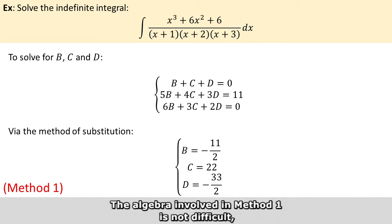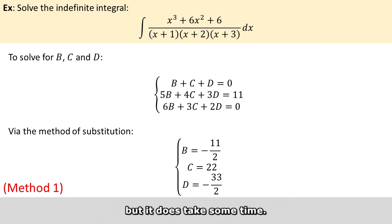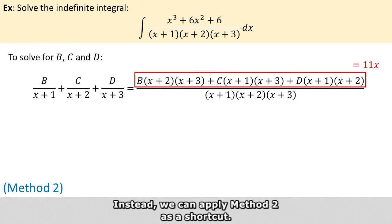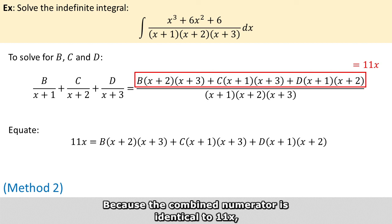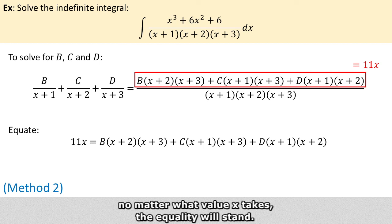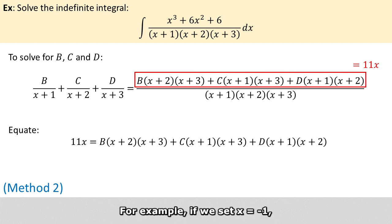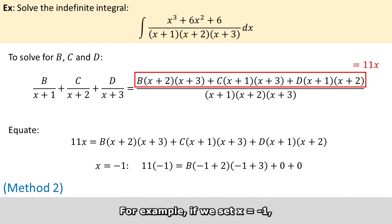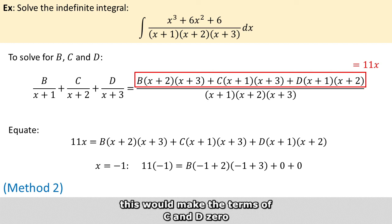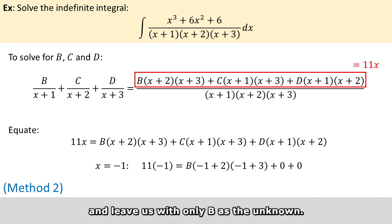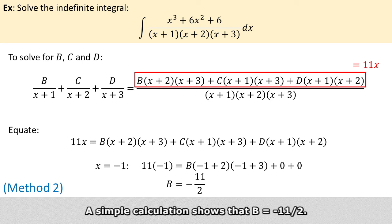The algebra involved in method 1 is not difficult, but it does take some time. Instead, we can apply method 2 as a shortcut. Because the combined numerator is identical to 11x, it means that no matter what value x takes, the equality will stand. In other words, we can take some special values of x to simplify the equality. For example, if we set x equals minus 1, this will make the terms of C and D 0, and leaves us with only B as the unknown. A simple calculation shows that B equals negative 11 over 2.